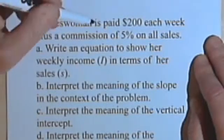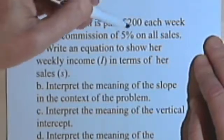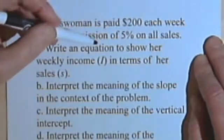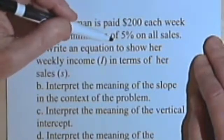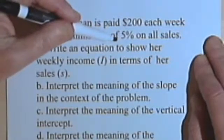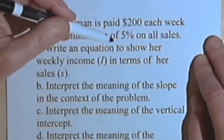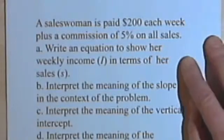So her income is going to be the $200 plus 5% of everything that she sells, 5% of the value, the cost, of everything that she sells. So let's see what the problem says after that.